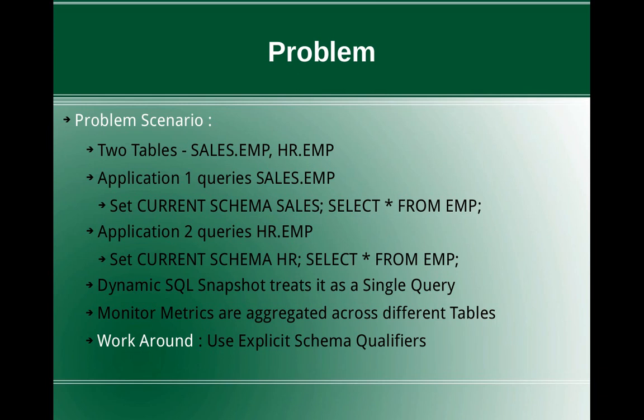Application one queries sales.emp using 'set current schema sales' and 'select star from EMP'. Application two also queries hr.emp, using 'set current schema hr' and then issuing 'select star from EMP'. Even though these two applications are using the same statement query text — select star from EMP — the underlying tables these queries access are completely different. After running these two queries, if you look at the dynamic SQL snapshot output, you will find that it treats it as a single query — not reporting two queries, but just a single query — and all the monitor metrics are aggregated across these compilations and executions.